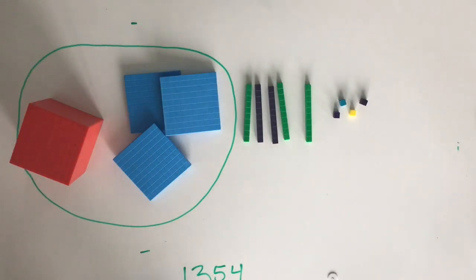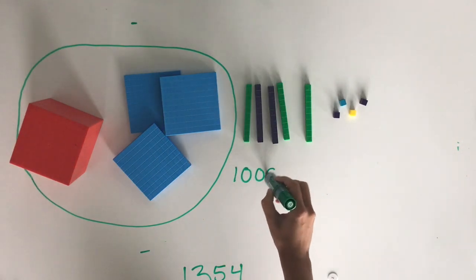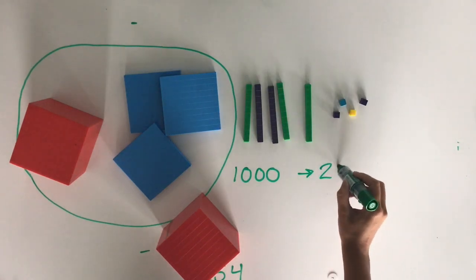When we're rounding, it's always important to know how many groups of 1,000 we have and what will come next. Now we have 1,000 in the thousands place for a value of 1,000. Our next 1,000 will be 2,000.